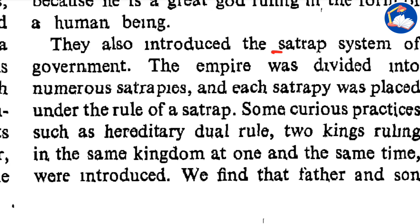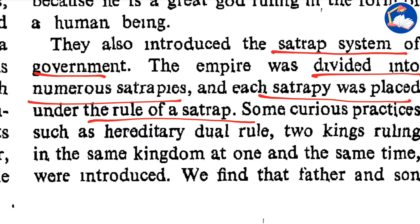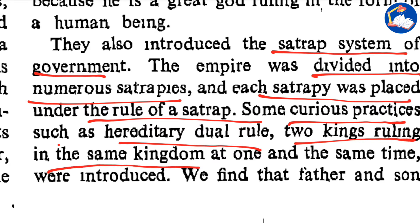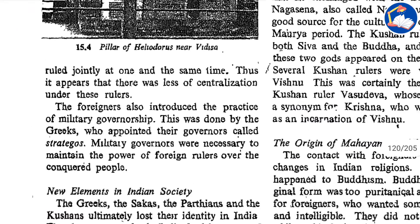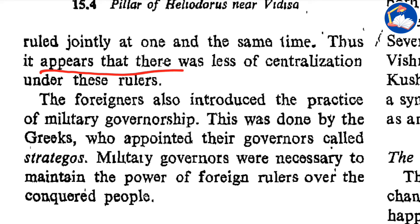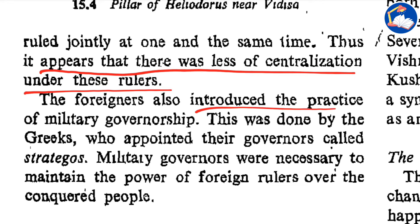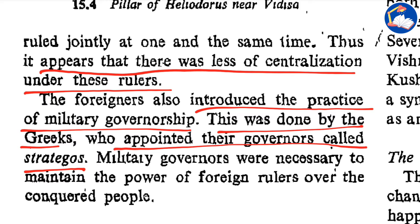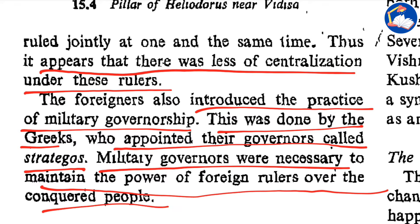They also introduced the satrap system of government, whereby the empire was divided into numerous satrapies or provinces, each placed under the rule of a satrap. Some curious practices such as hereditary dual rule — two kings ruling in the same kingdom at one and the same time, such as father and son ruling jointly — were also introduced. Thus it appears there was less centralization under these rulers. The foreigners also introduced the practice of military governorship, done by the Greeks who appointed their governors called strategoi. Military governors were necessary to maintain the power of foreign rulers over the conquered people.